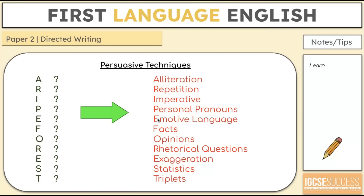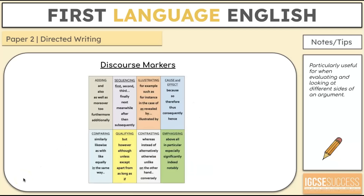Obviously not all persuasive techniques are going to be suitable for all tasks — it depends whether you get a more formal or informal task. Everything comes down to audience and purpose. There are other techniques you could use: sarcasm, humour, hypophora — the list is endless. Whatever task you get, it's really important that you're confident using a range of discourse markers, particularly contrasting ones: whereas, instead of, alternatively, otherwise, unlike, on the other hand, conversely, etc.